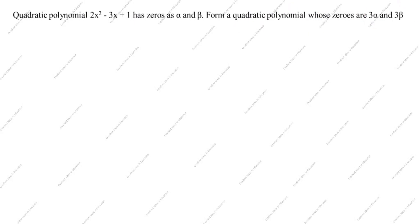Now let's see how to solve this problem. What is given: 2x squared minus 3x plus 1. Comparing with the standard form ax squared plus bx plus c, we get a equals 2, b equals minus 3, and c equals 1.